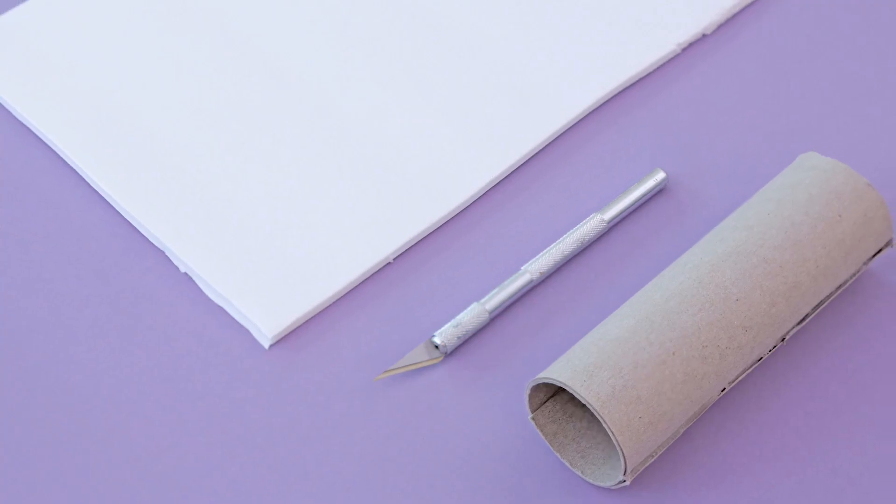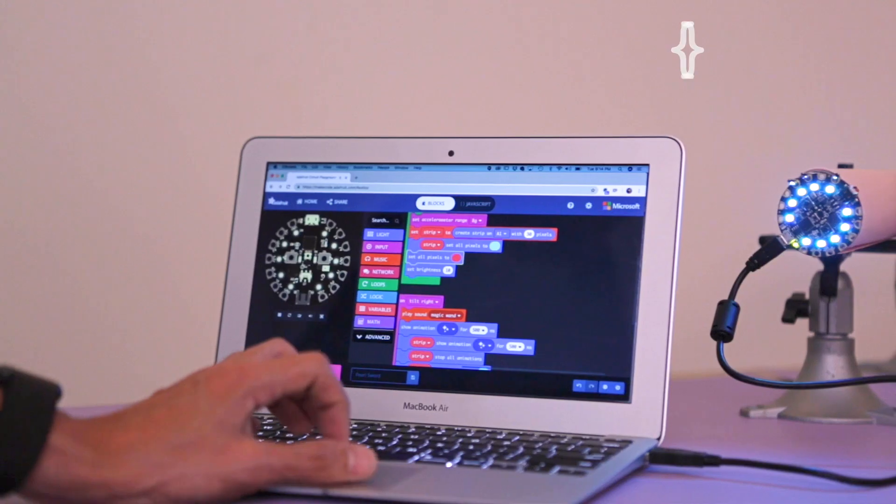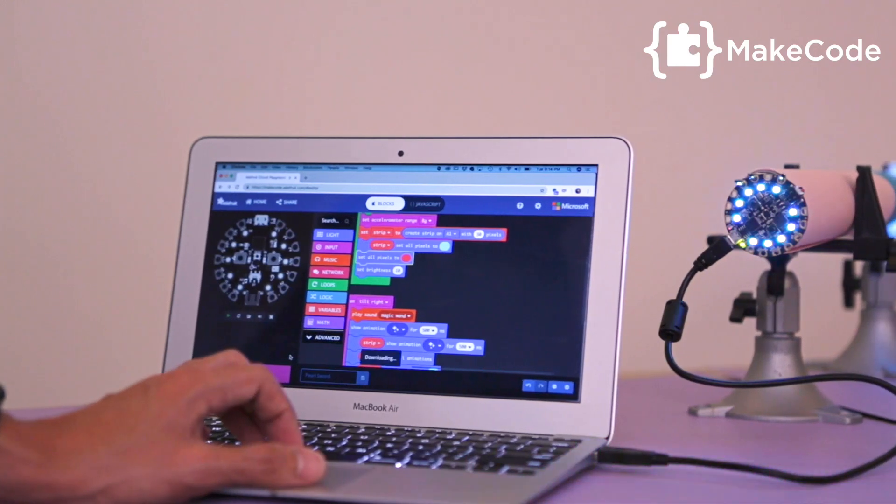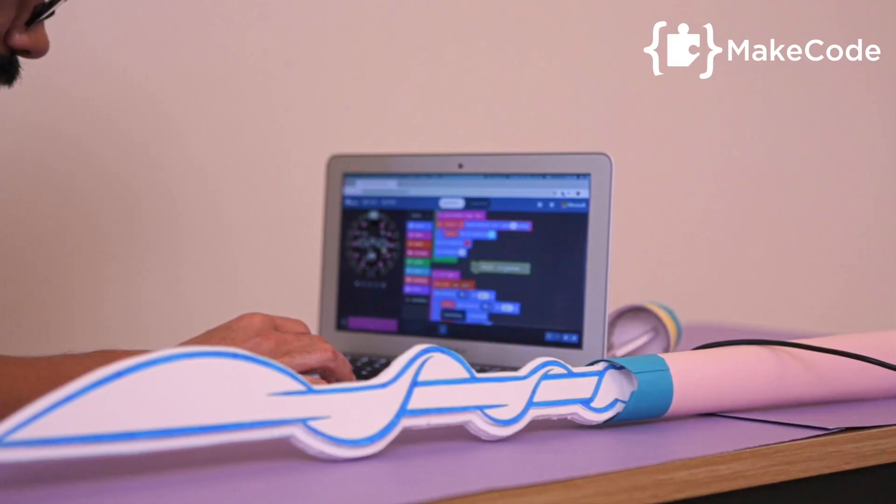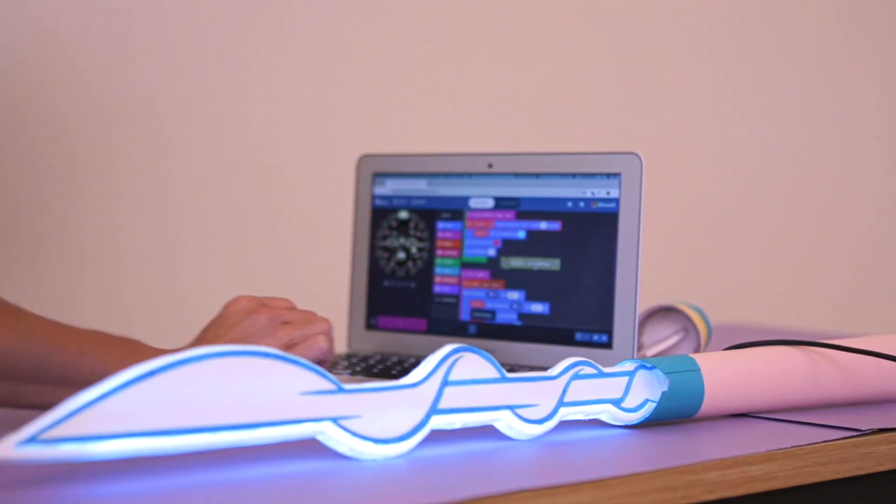To build this project, all you'll need are some poster boards and art supplies. Use Microsoft Makecode and Adafruit Circuit Playground Express to learn how to program. Drag and drop code blocks to develop interactive LED animations.